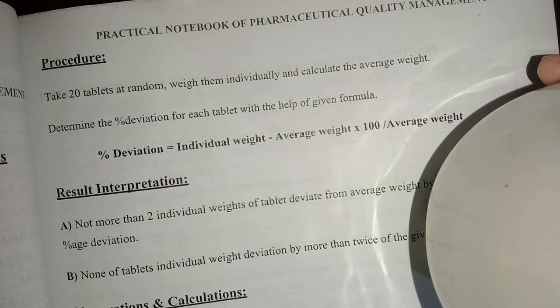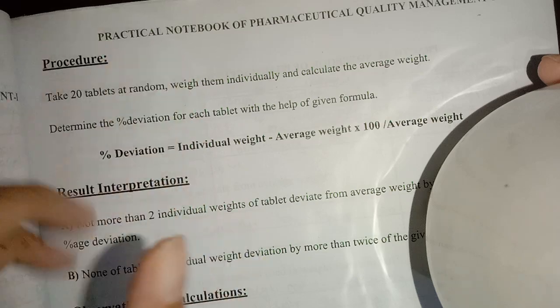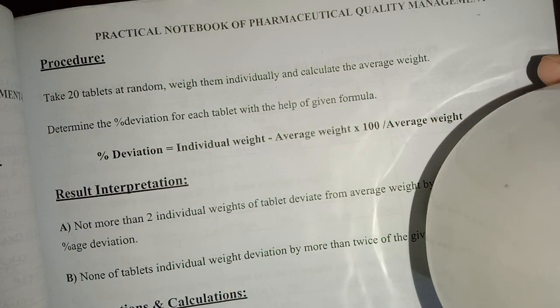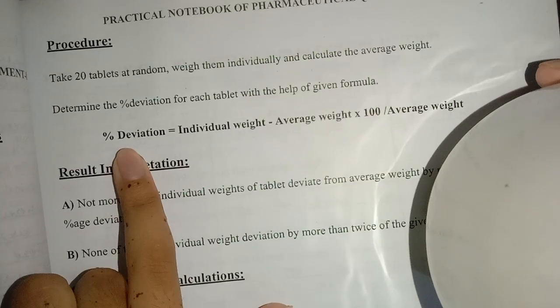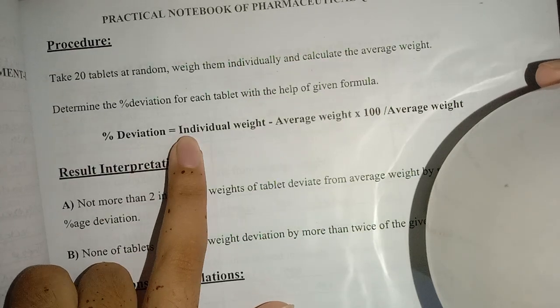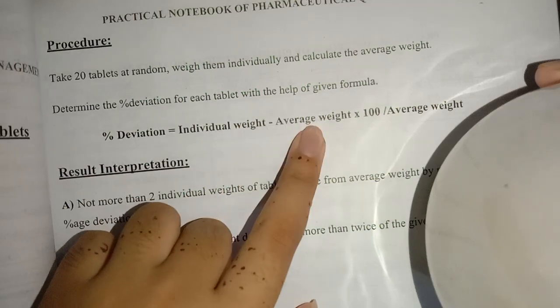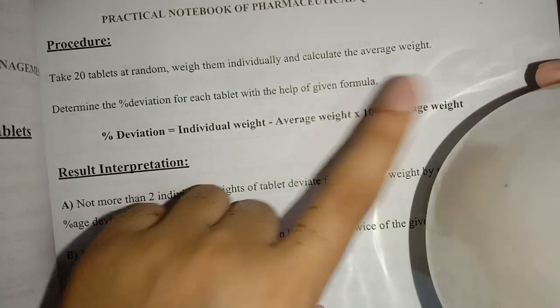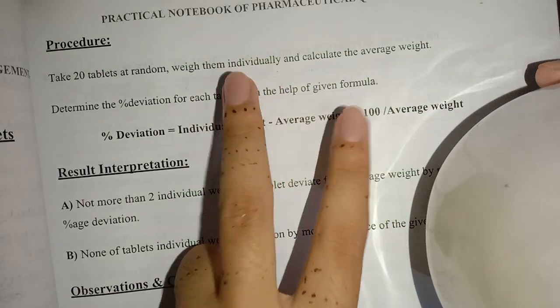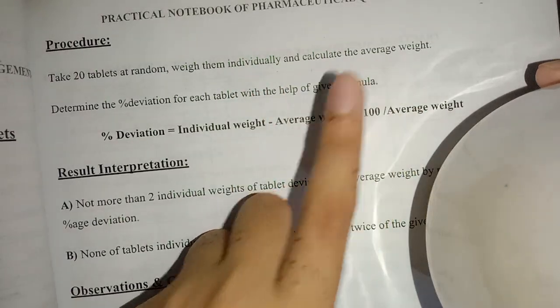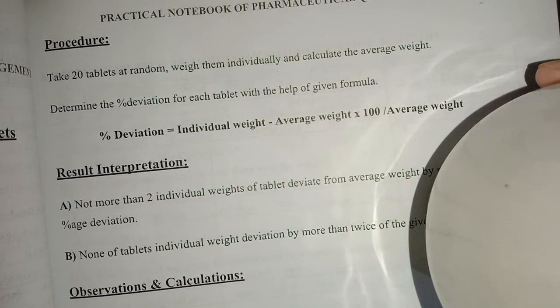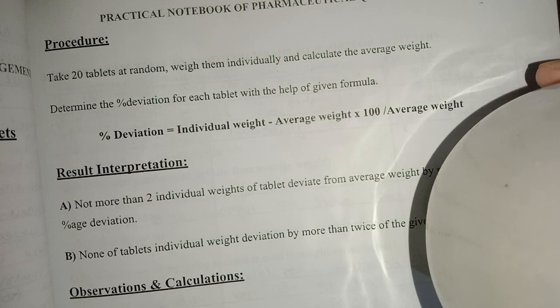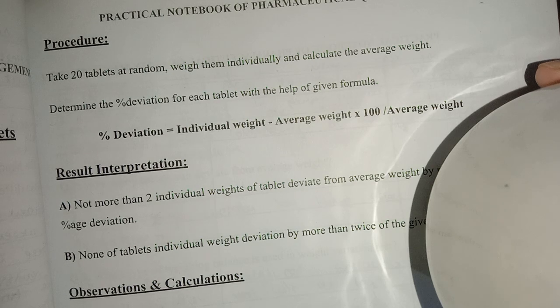Then we calculate percentage deviation. The formula is: individual weight minus average weight, multiplied by 100, divided by average weight. You have to remember that average weight is mentioned two times, so one is up and one is down. Multiply by 100 because you will find a percentage deviation.